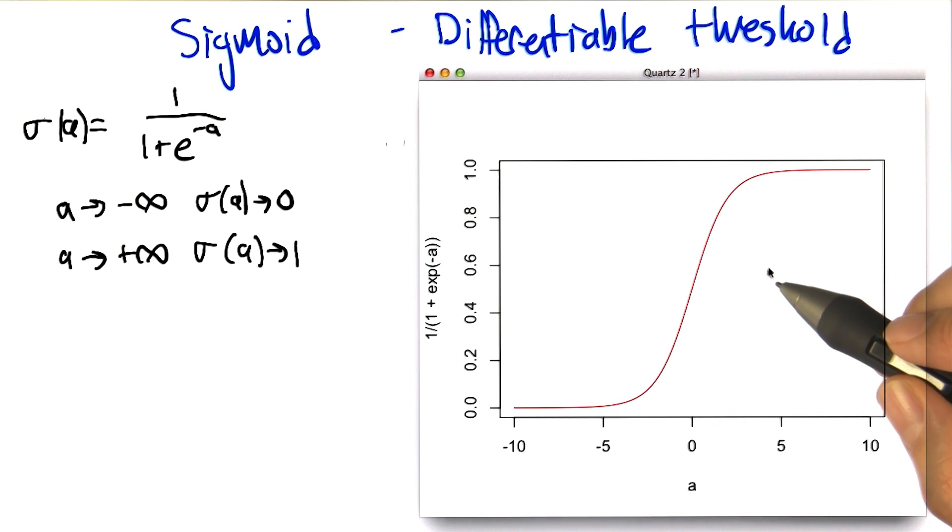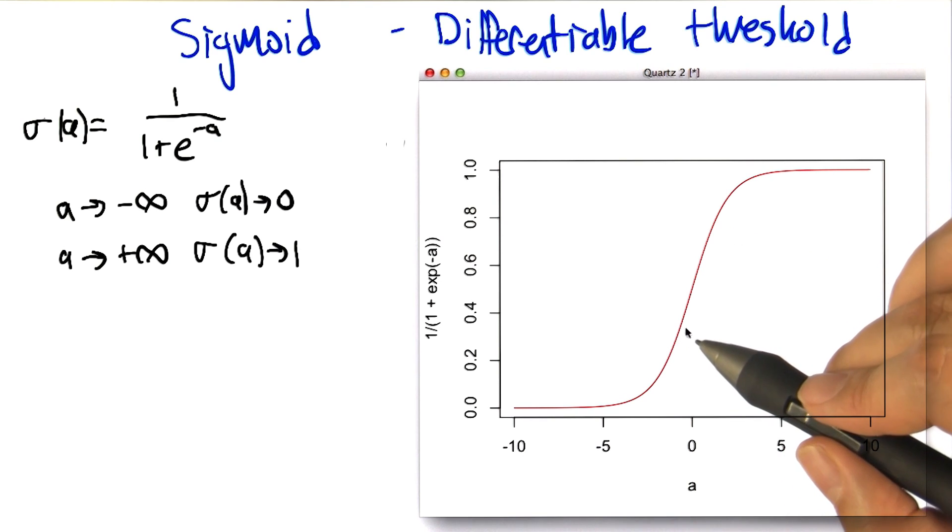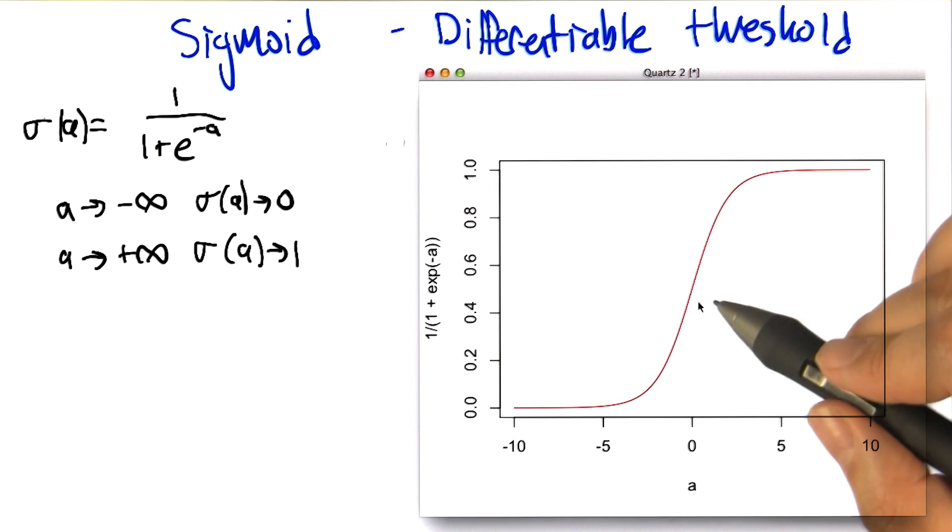It does, I buy that. All right, good. So if we have units like this, now we can take derivatives, which means we can use this gradient descent idea all over the place.